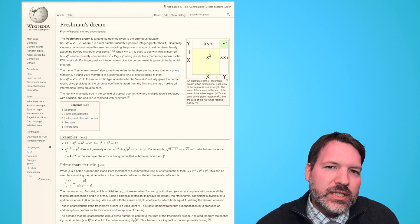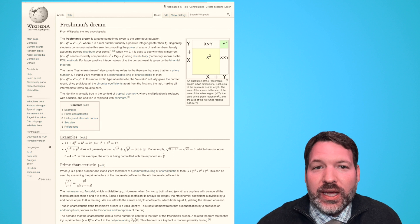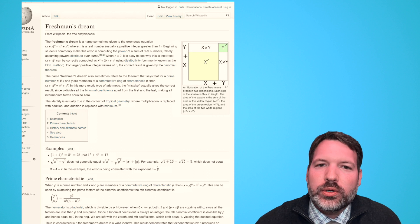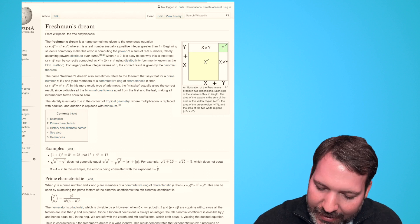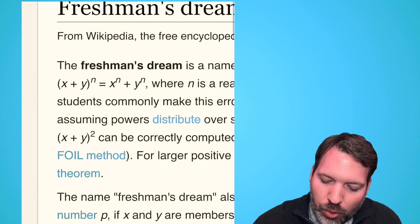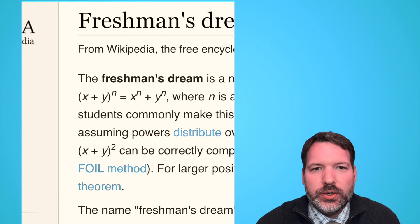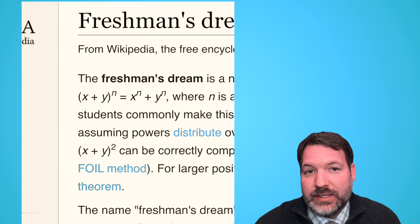This misconception is so common, it has its own Wikipedia page. If you search for Freshman's Dream on Wikipedia, you can see an actual page dedicated to this idea that if you have some power of (x + y) in general, shouldn't it just be equal to x^n + y^n?